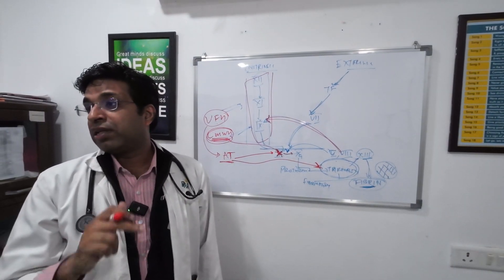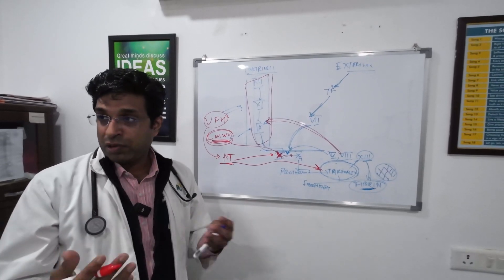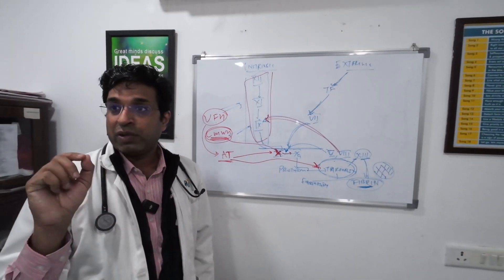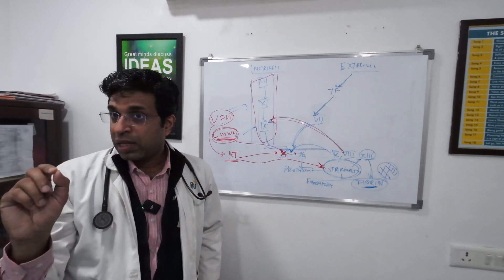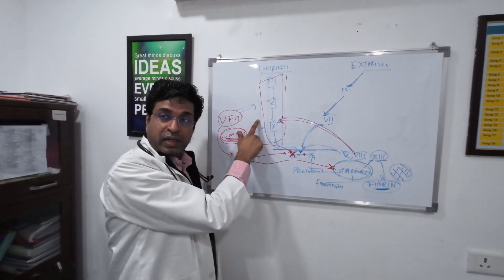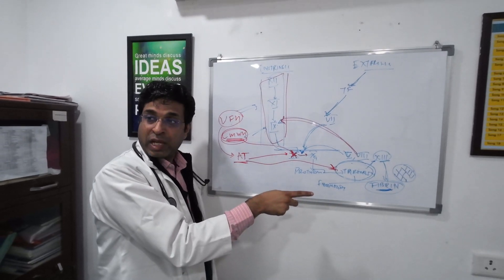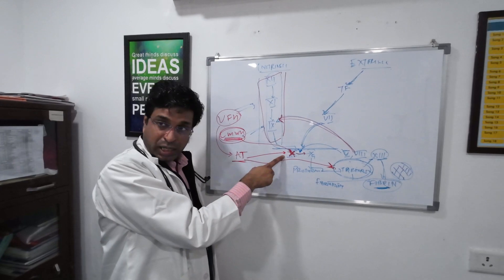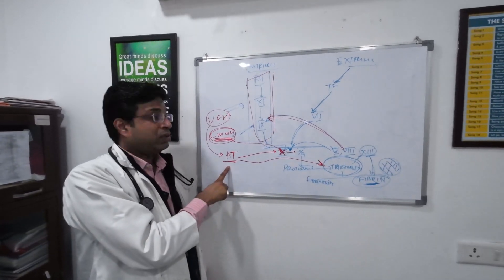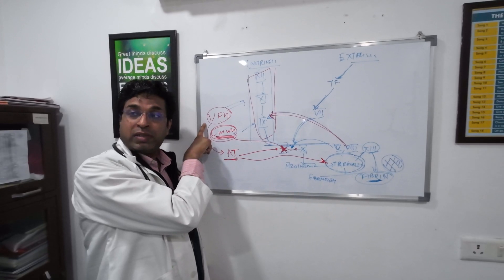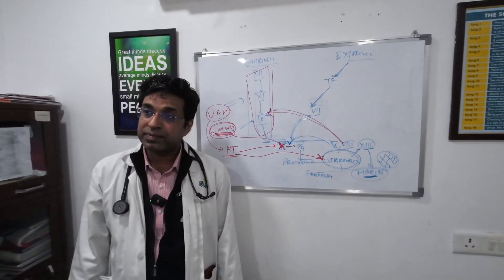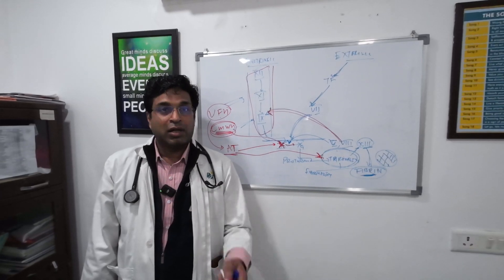APTT is required to monitor unfractionated heparin activity because if you don't monitor it, bleeding risk can increase too much. To summarize: LMWH only affects factor 10A, while unfractionated heparin blocks both 10A and thrombin via antithrombin — because it has longer chains. That's why APTT is used for unfractionated heparin but not for LMWH. Thank you for asking this question — do read more about this.